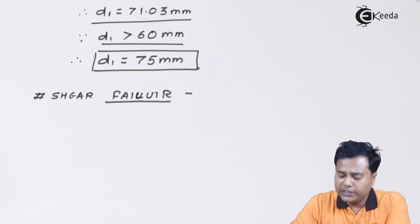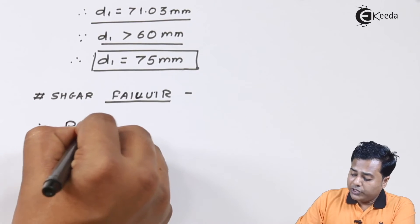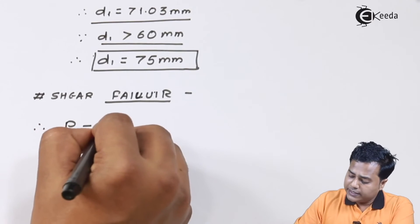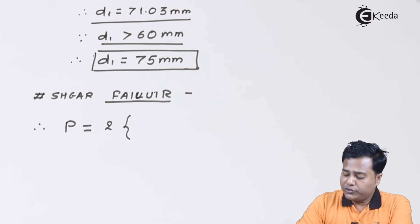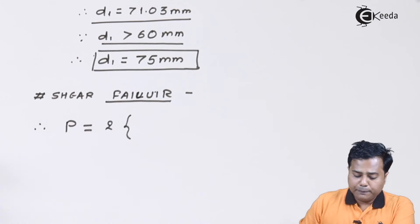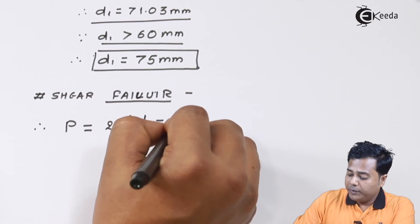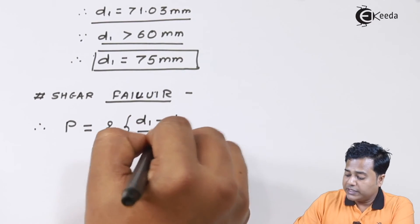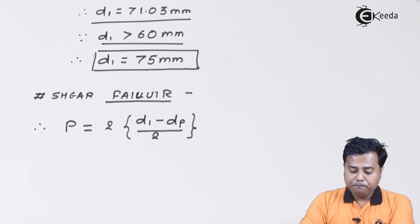In case of shear failure we have to check whether it is sustaining the maximum shear stress or not. The formula becomes: axial load equals twice (d₁ minus dp) divided by 2, times the length L, times τ.